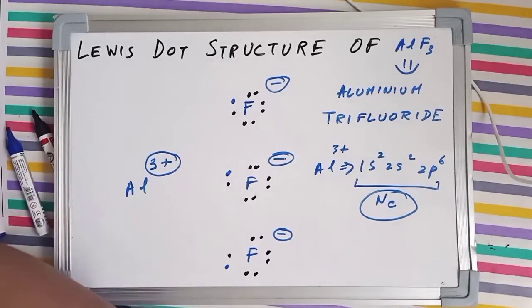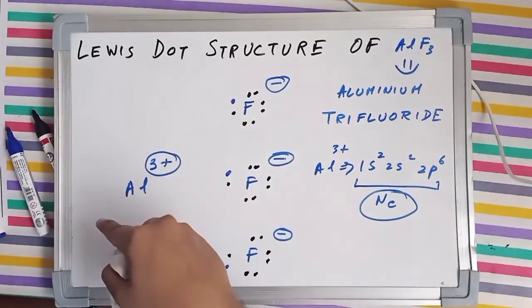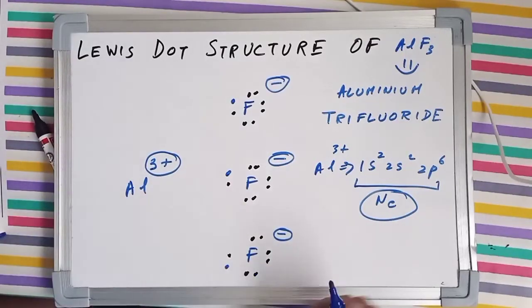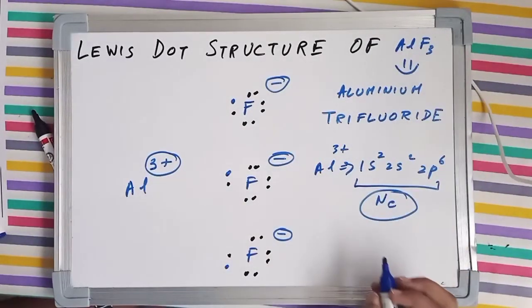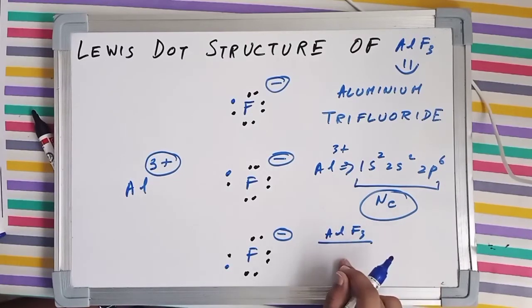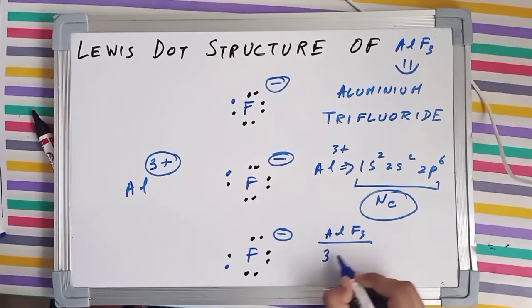Now this will not be the structure. It was just for understanding purposes as I said earlier. Now for drawing the structure we'll find out the hybridization. So aluminum had 3 valence electrons. We are finding the hybridization of AlF3.